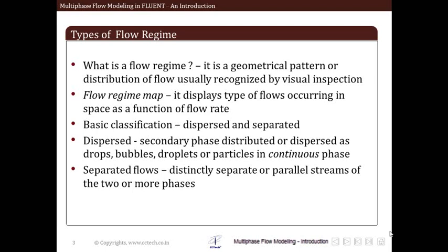A flow regime is a geometrical pattern or distribution of flow usually recognized by visual inspection. Whenever we see any multiphase flow phenomenon either in industry or the environment, just by visual inspection we can infer that some typical geometrical pattern is associated with it. These categories of geometrical patterns are said to be flow regimes — in simple terms, this is nothing but how the multiphase flow looks.